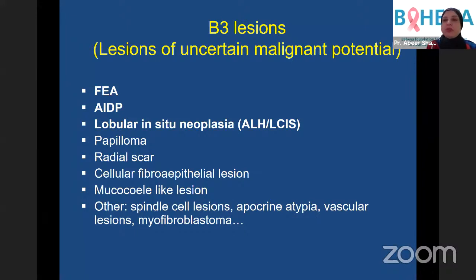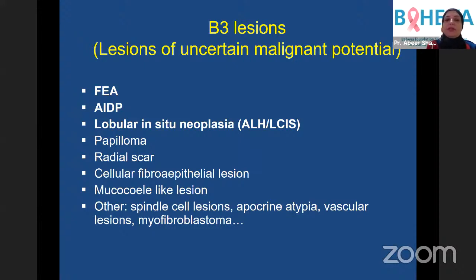B3 is a heterogeneous group of lesions including: flat epithelial atypia; atypical intraductal proliferation (ADH, atypical ductal hyperplasia); lobular carcinoma in situ; lobular neoplasias including atypical lobular hyperplasia and in situ carcinoma; papilloma with or without atypia; radial scar; fibroepithelial lesions where phyllodes cannot be excluded; mucocele-like lesions; and some uncommon entities such as spindle cell lesions, apocrine atypia, vascular lesions, myofibroblastomas, and others.